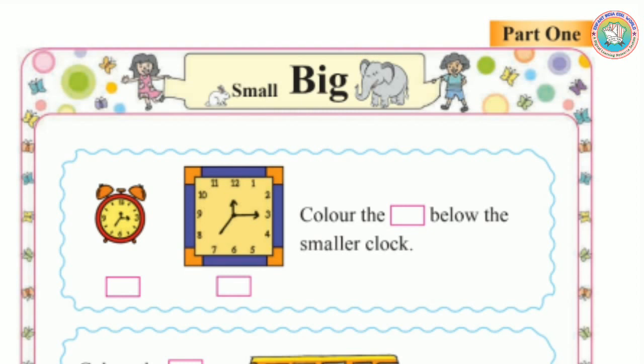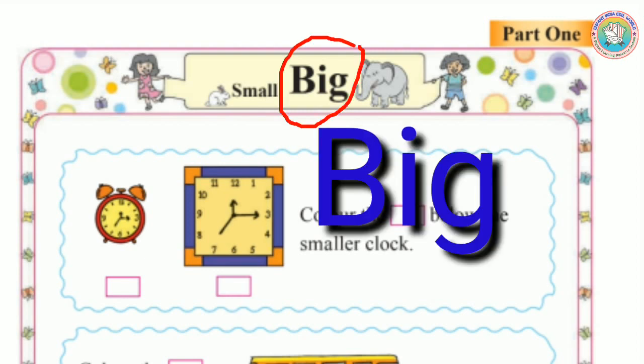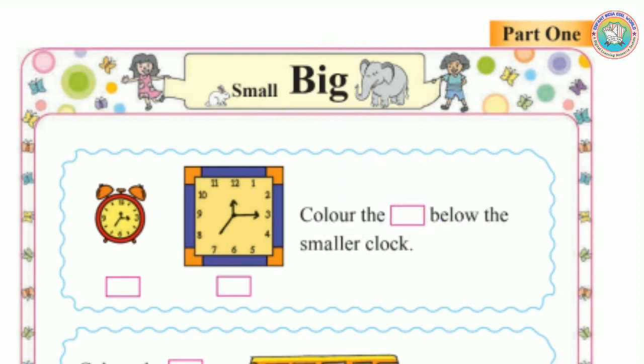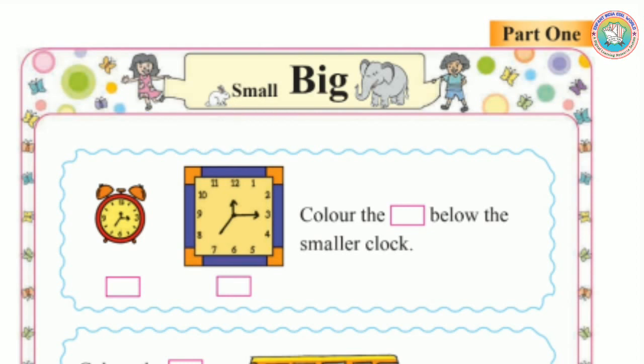What is the spelling of big? Big — B-I-G. What is the spelling of small? Small — S-M-A-L-L. Something which is very tiny, very small to see, we call that object as small.